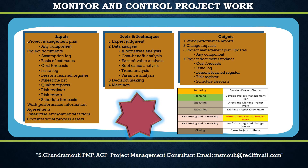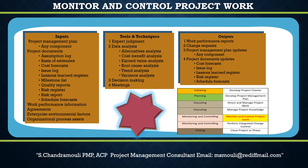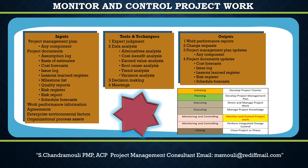The next input is Enterprise Environmental Factors. Enterprise environmental factors that can influence the Monitor and Control Project Work process include but are not limited to: governmental or industry standards (e.g., regulatory agency regulations, codes of conduct, product standards, quality standards, and workmanship standards); organizational work authorization systems; stakeholder risk tolerances; and project management information systems such as scheduling software tools, configuration management systems, and information collection and distribution systems or web interfaces to online automated systems.